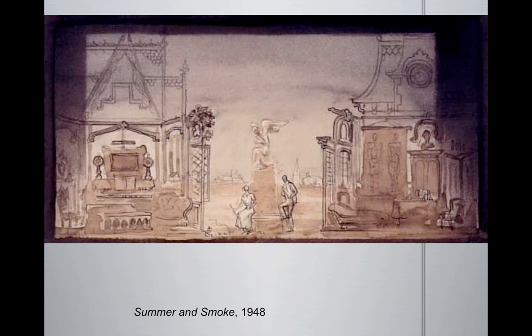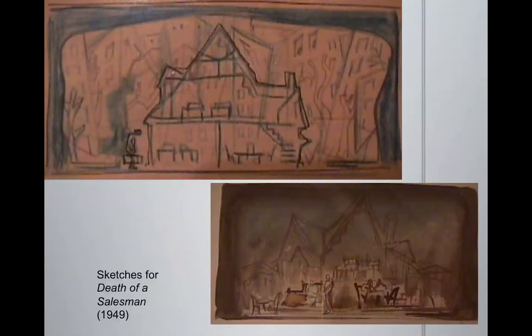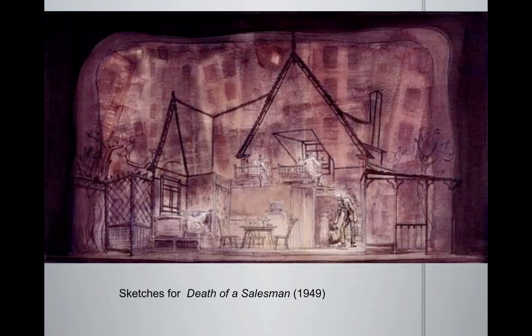Here's another Tennessee Williams set — Summer and Smoke, a Mielziner design from 1948. We have two mostly realistic interiors, but then there's this sort of wasteland in between, and a very skeletal feel to the two houses. Another great example of Mielziner's poetic realism in visual storytelling. Here we have some early Mielziner sketches for Death of a Salesman — most notably, the background of the top photo shows the city closing in around the house, with the buildings deliberately distorted. We also have this sort of skeletal frame of the house. The buildings are distorted, but also realistic at the same time — a nice combination of expressionism and realism.